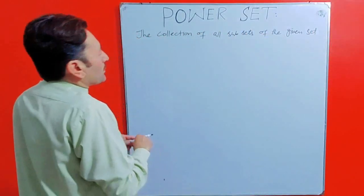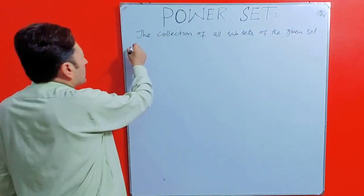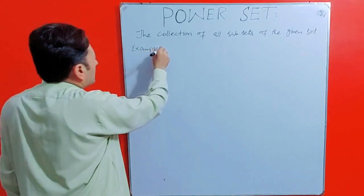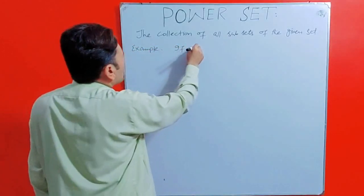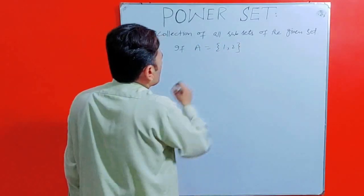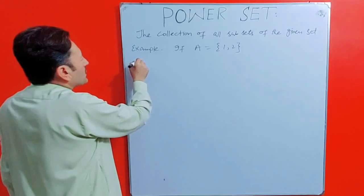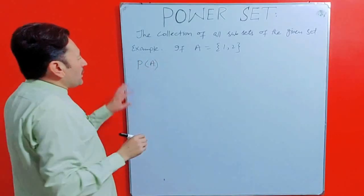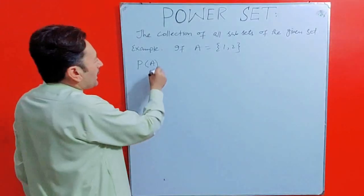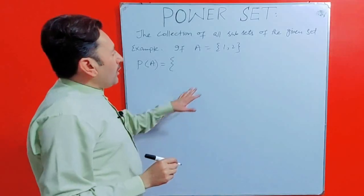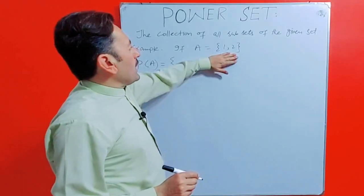So let us take an example to clear this. An example is if A is equal to {1, 2} then power set of A is denoted by P(A). Actually P(A) is the representation of power set of A and this set will consist of all subsets of A.